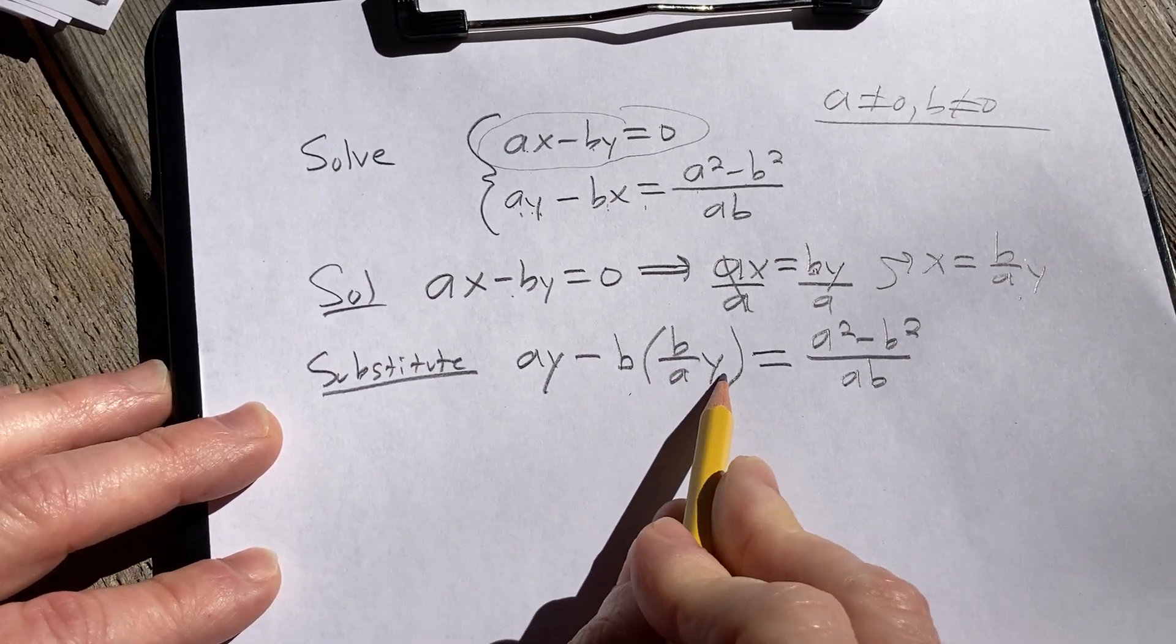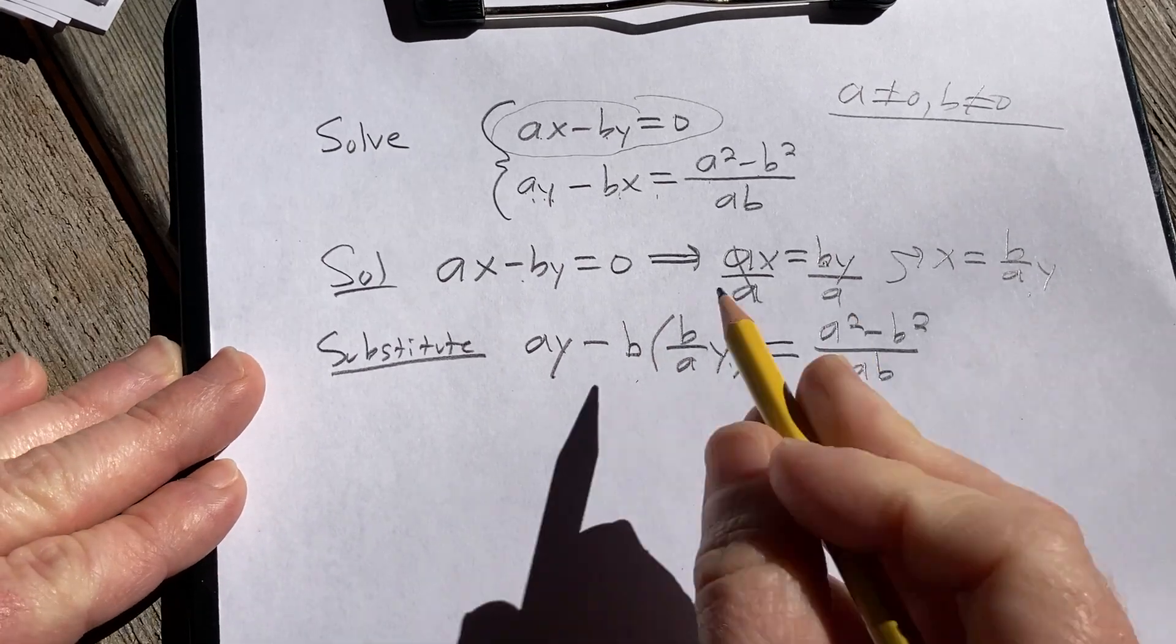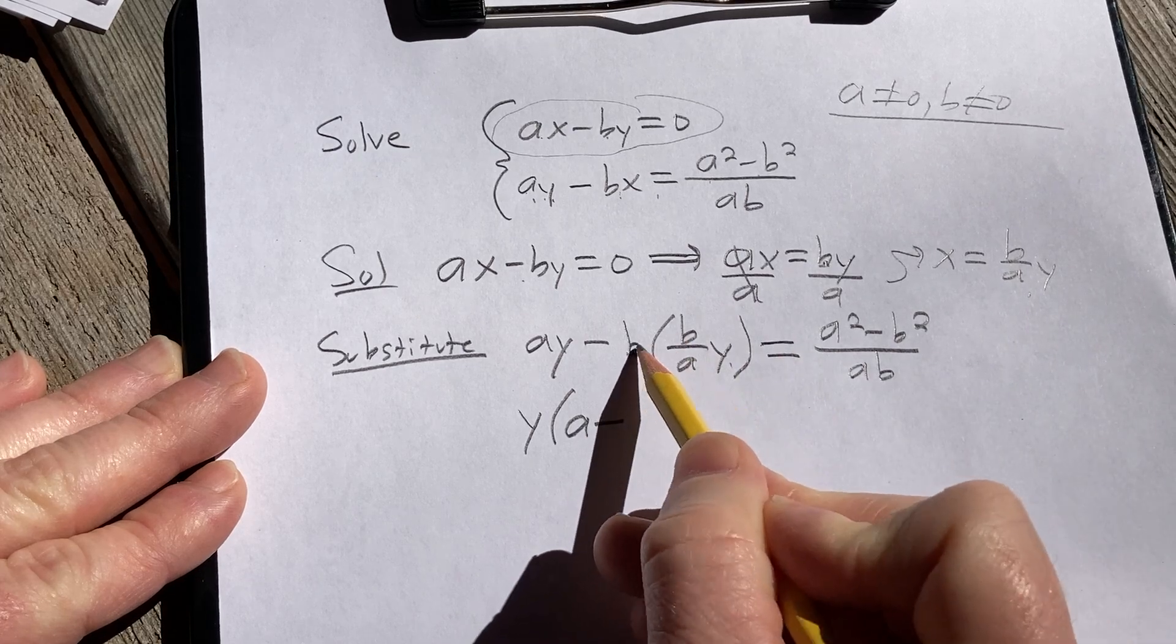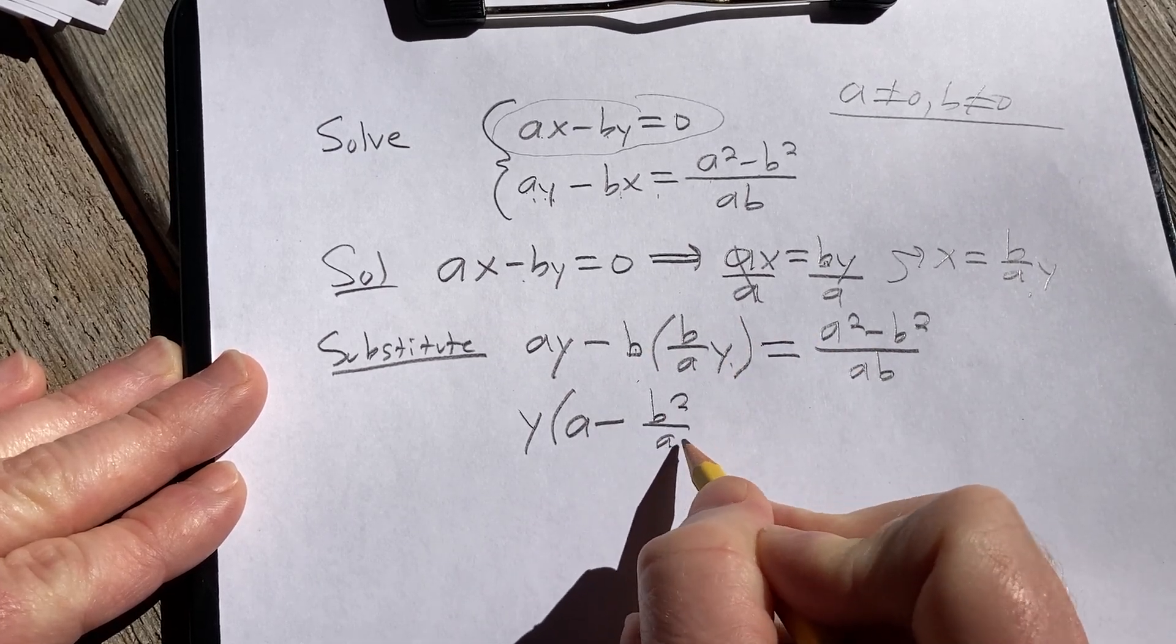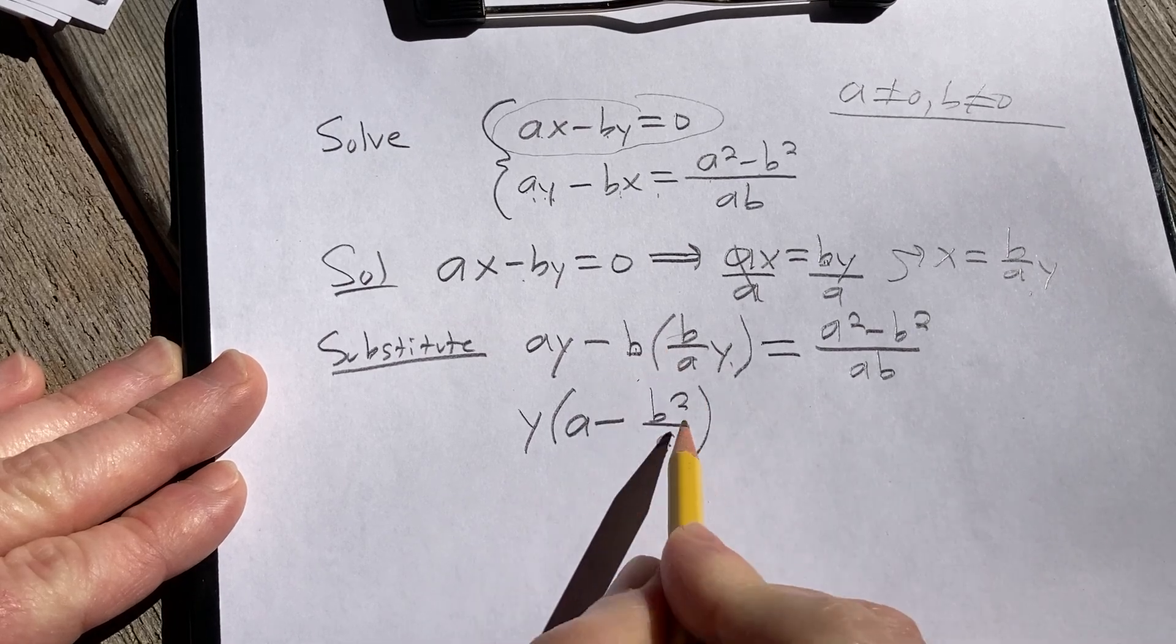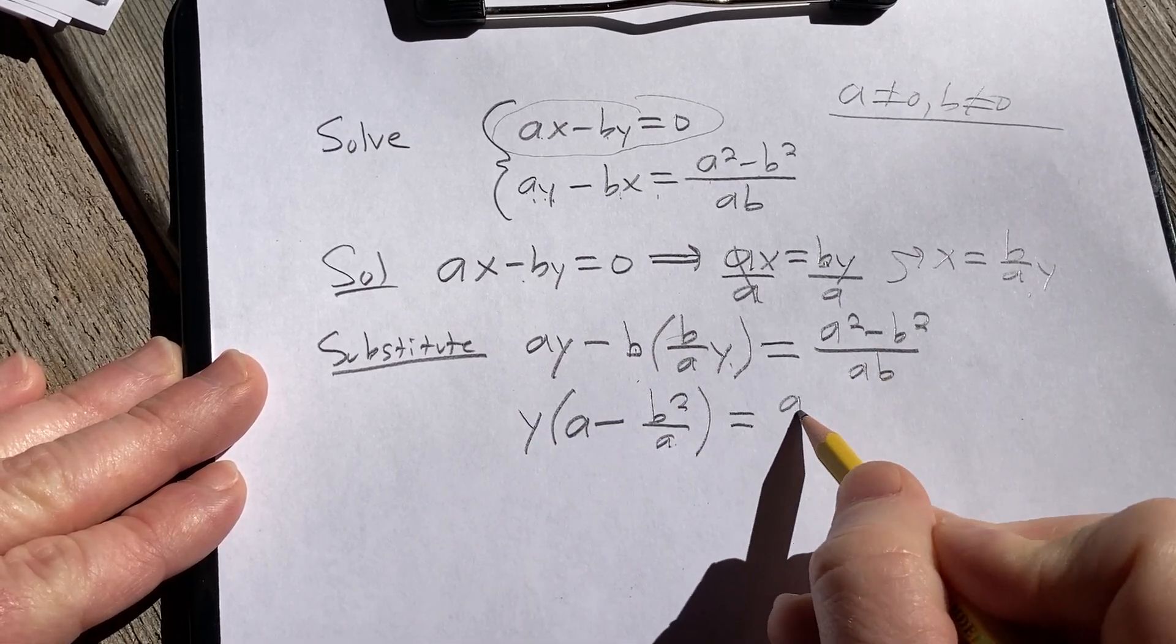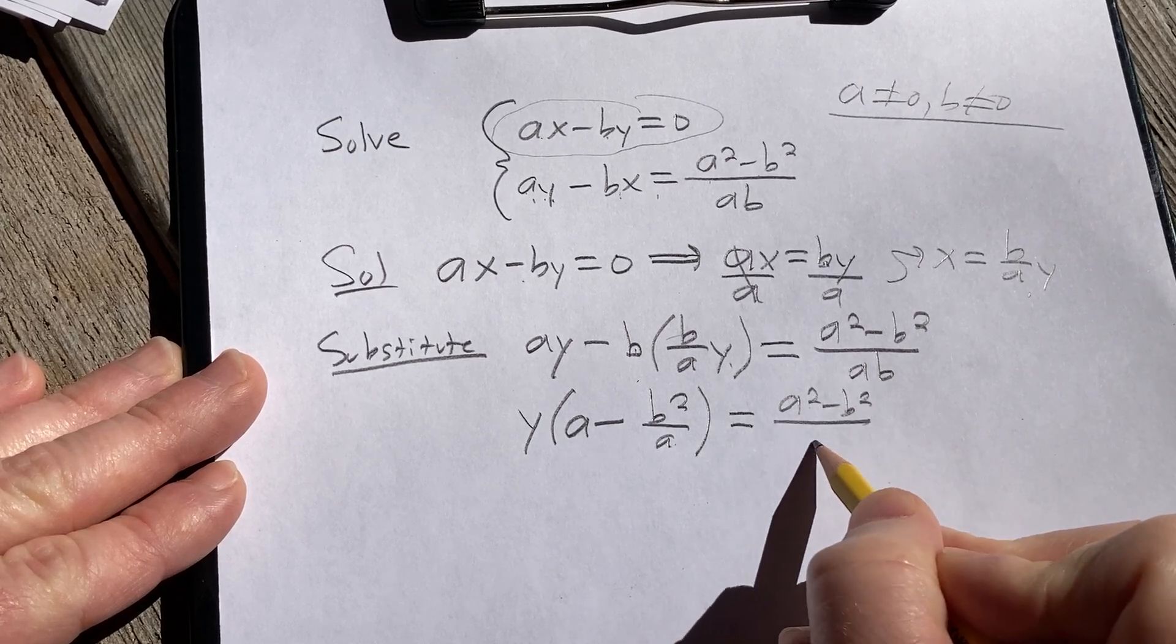Okay, we can pull out a y here because we're looking for y. So it'll be a minus b times b is b squared. Right, b squared over a, and we pulled out the y. And over here we have a squared minus b squared over ab.